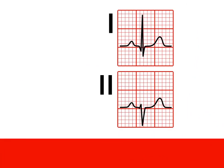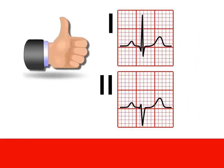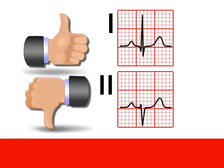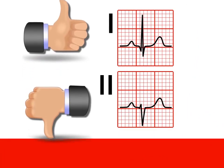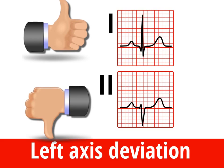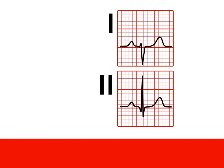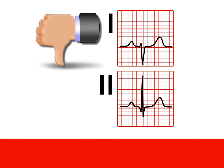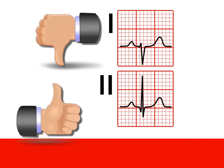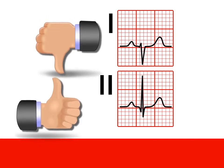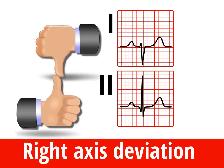If lead 1 is positive but lead 2 is negative, your thumbs have left each other and that's left axis deviation. If lead 1 is negative and lead 2 is positive, your thumbs are heading right for each other and that's right axis deviation.